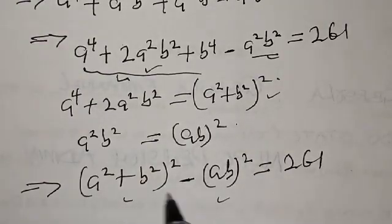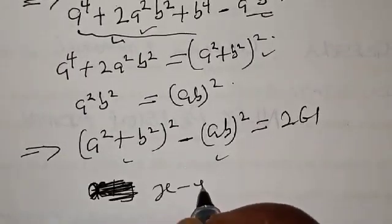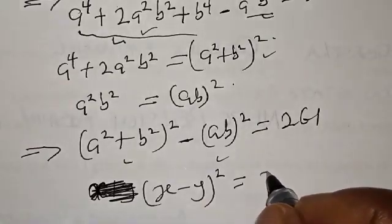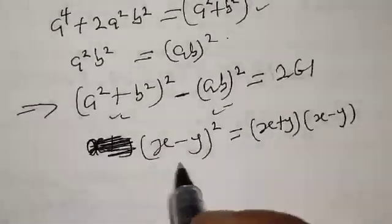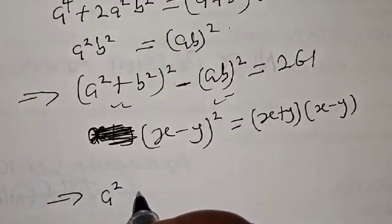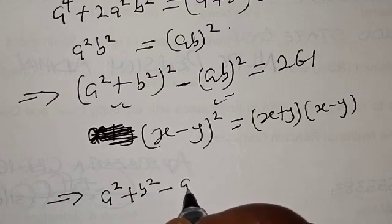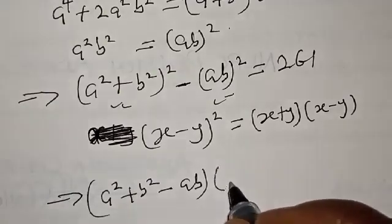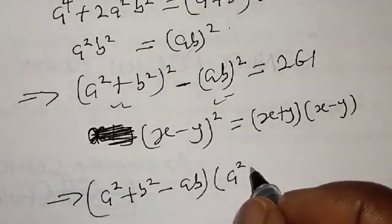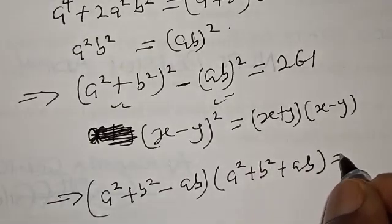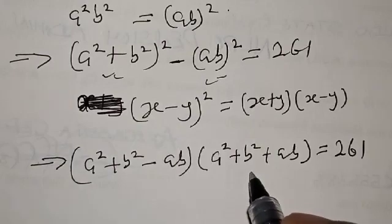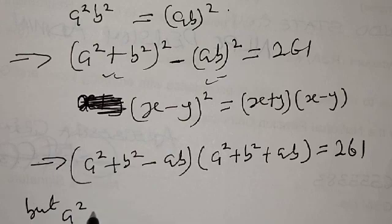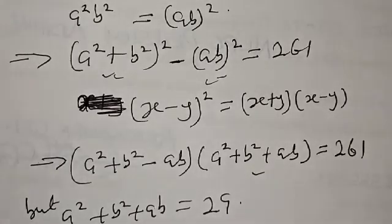This is a difference of two squares. Using the identity x squared minus y squared equals x plus y times x minus y, we get a squared plus b squared minus ab, times a squared plus b squared plus ab, equal to 261. From the question, a squared plus ab plus b squared equals 29, so we substitute that in.